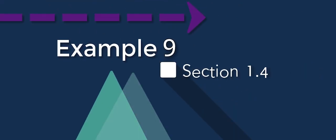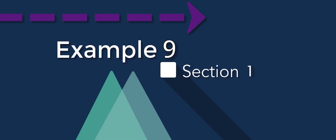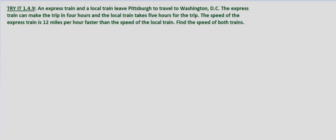With this problem we're told that an express train and a local train leave Pittsburgh to travel to Washington DC. The express train can make the trip in four hours and the local train takes five hours for the same trip. We're also told that the speed of the express train is 12 miles per hour faster than the speed of the local train and we're asked to find the speed of both trains. So let's just get a little bit of a visualization of what we're looking for.